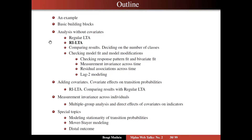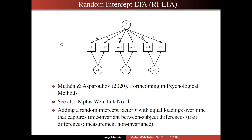So here we are on the outline analysis without covariates still, and now we're going to turn to RILTA — random intercept latent transition analysis. Here you have the model figure. We have the usual latent transition analysis model here at the bottom, but now we're adding a factor, a continuous latent variable, and we're going to think of that as a random intercept.